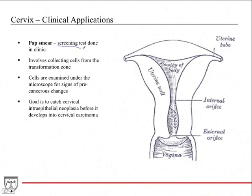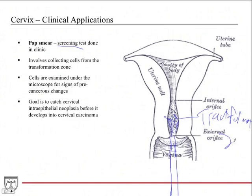A pap smear is a screening test that involves inserting a brush on the end of a long instrument. You spin it around and it collects cells, especially from the transformation zone — that point of change from simple columnar epithelium to stratified squamous non-keratinized epithelium — which is at high risk for developing malignancy. The cells are examined under the microscope for precancerous changes. The goal is to catch abnormalities at the CIN phase, before progression to cervical cancer, so the patient can be treated.